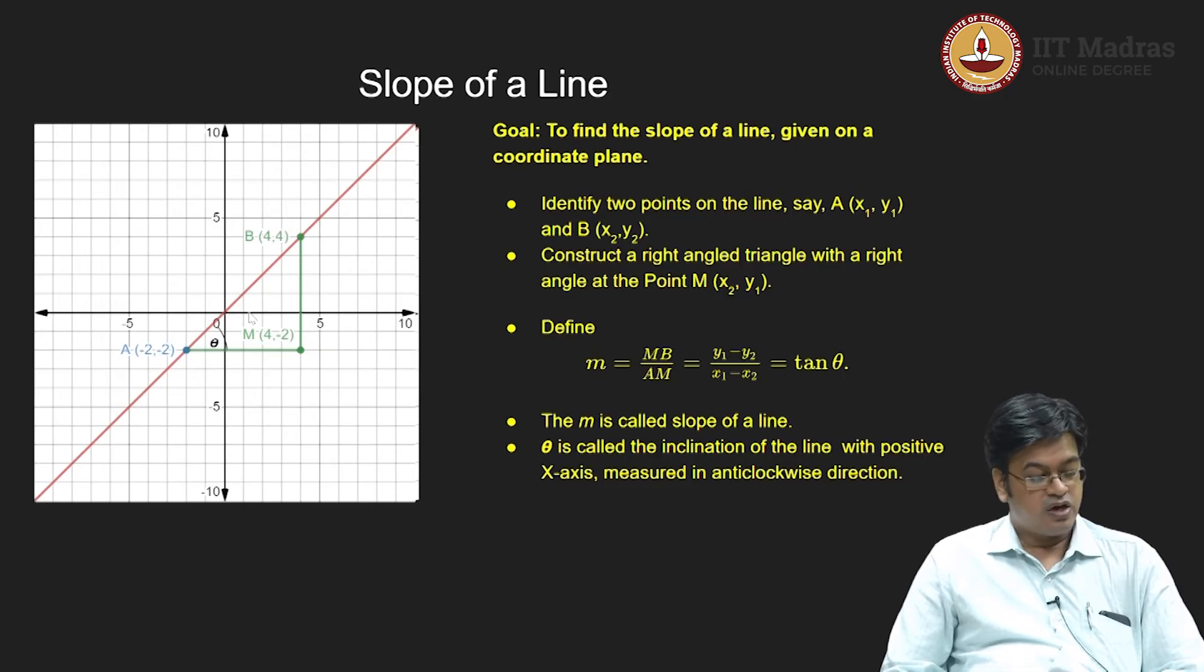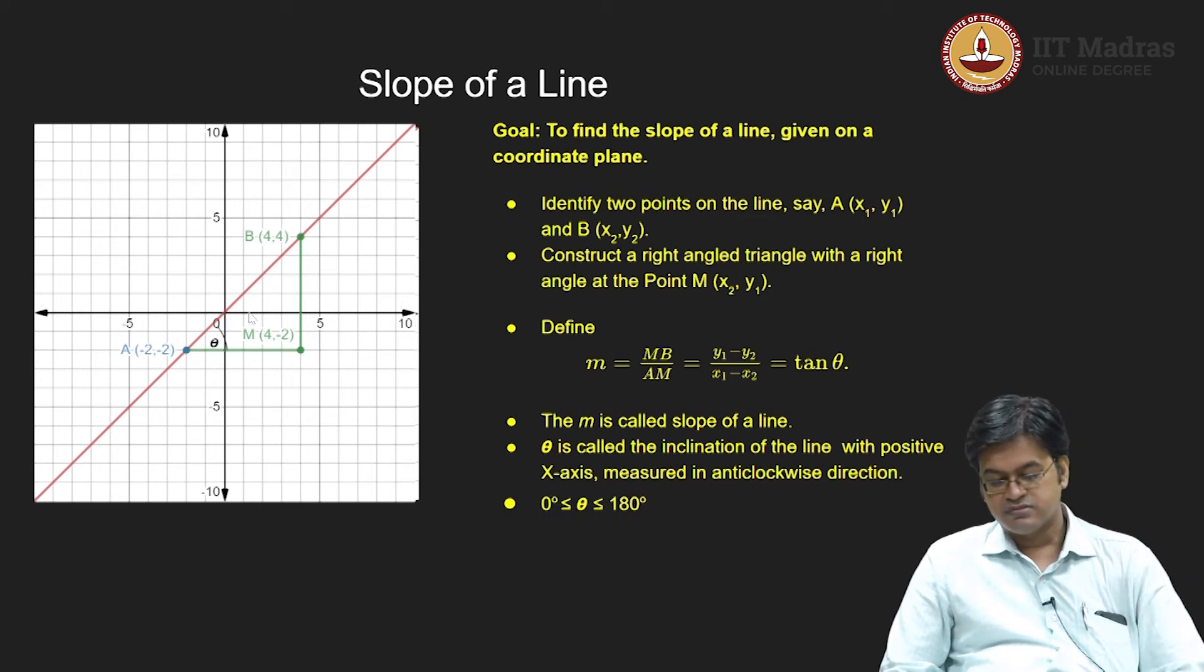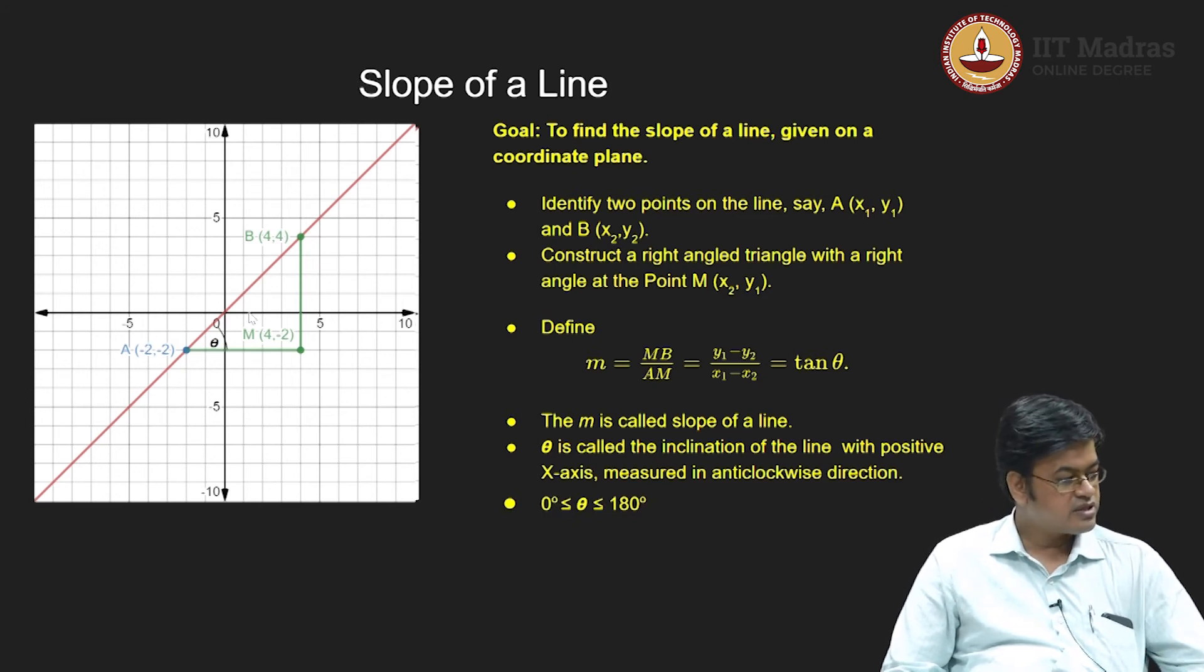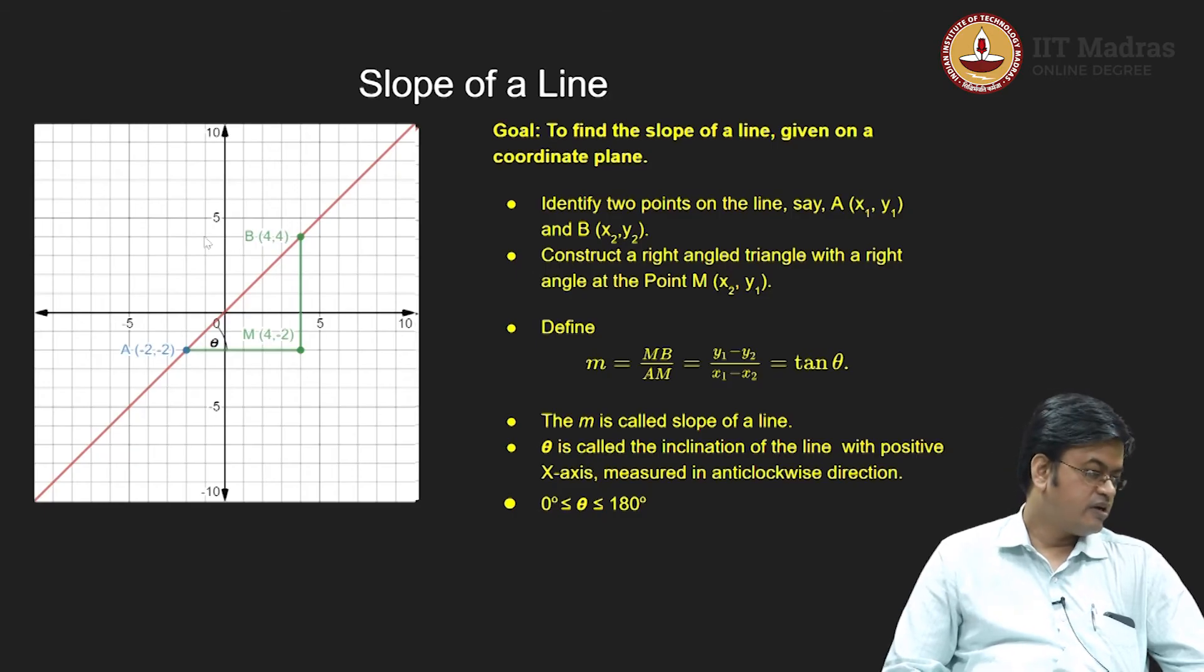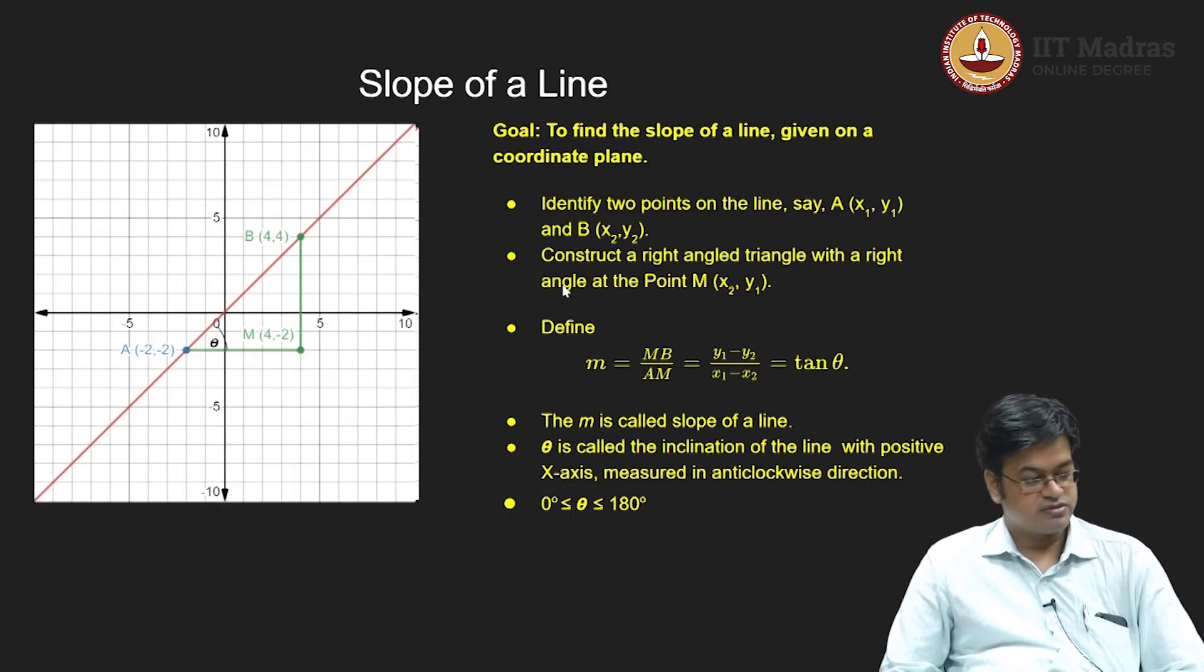So now how far can the theta go? So to answer that question, let us try to see if I am considering a theta, then theta can be equal to 0, theta equal to 90 degrees tan is not defined as you can see tan of 90 is not defined, but it can go up to 180 degrees. So the variation of theta allowed is 0 to 180 degrees.